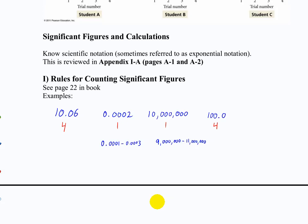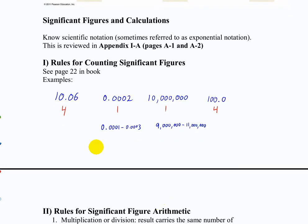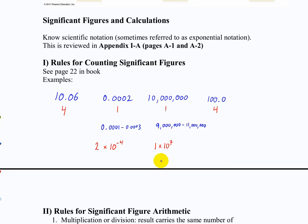Someone mentioned scientific notation — that's a good point. If we express 0.0002 in scientific notation, it's 2 × 10⁻⁴. And 10,000,000 is 1 × 10⁷. The 10 to the power tells us the magnitude — it's not significant. The 1 and the 2 are the significant figures. That's why we often express numbers like this in scientific notation, so it's not confusing how many significant figures we have.